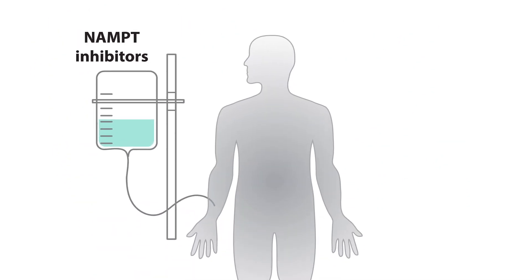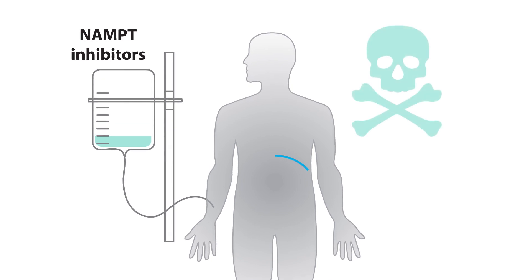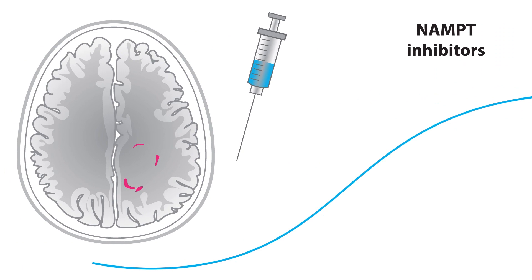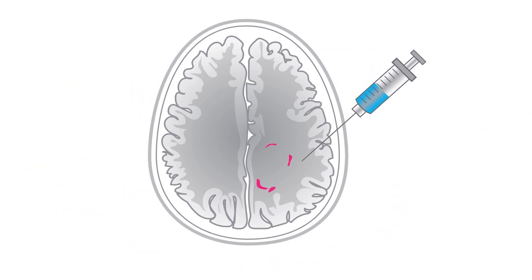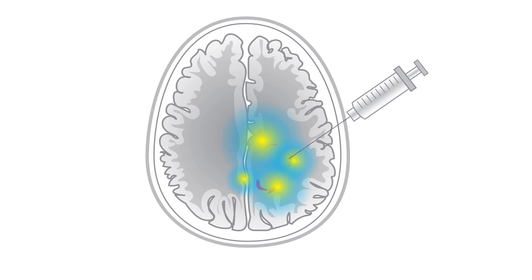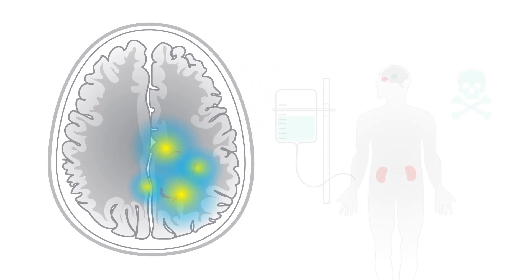Unfortunately, the treatment that works best on these tumors is toxic to the kidneys and the retina, so it cannot be used systemically. A key breakthrough in treating these types of tumors would be finding a way to apply the treatment locally in the brain, using sustained drug-release methods.